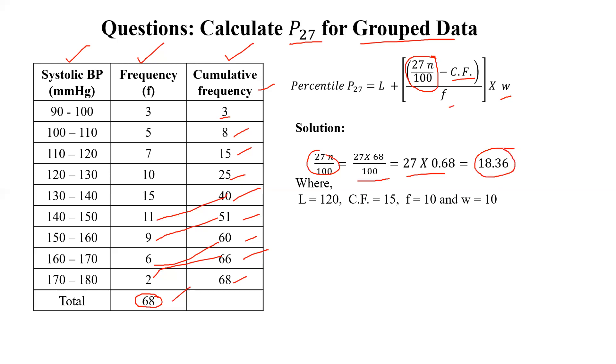Now, we have to go in cumulative frequency column and find out 18.36 or just greater value. If we go through cumulative frequency column, see here 15, after 15 is 25, but we have to find out 18.36. Here no 18.36, then we'll take the nearby number, which would be 25. So no equal value, so greater value we'll take, which is 25. This is our percentile class interval.